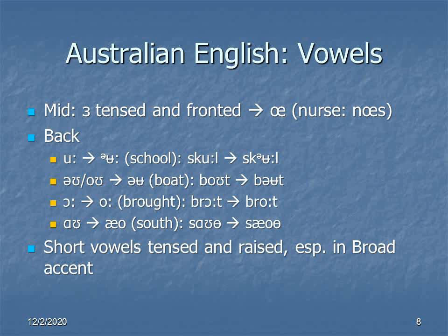As for the short vowels, generally speaking these are tensed and raised — especially in the broad accent, which is one of its defining features. Those vowels are very tense and quite high, sometimes extremely high. So rather than having a CAT, you might have a KET, or even in broad Australian, a KIT.